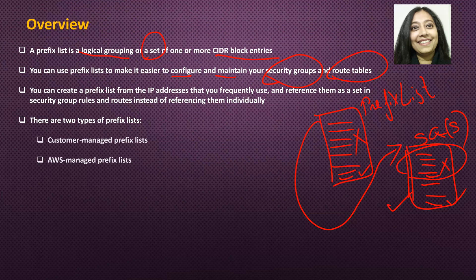You can create a prefix list from the IP addresses that you use frequently and reference them as a set in your security group rules and routes instead of referencing them individually. Earlier, you would probably reference them individually, but if you use a prefix list, then it's at a central location, it's a single place. And if you make a change there, all the groups referencing that particular prefix list will automatically get updated.